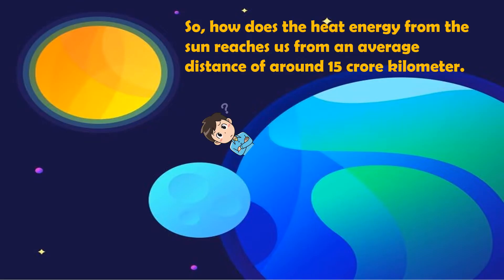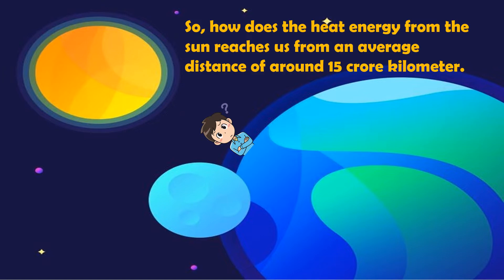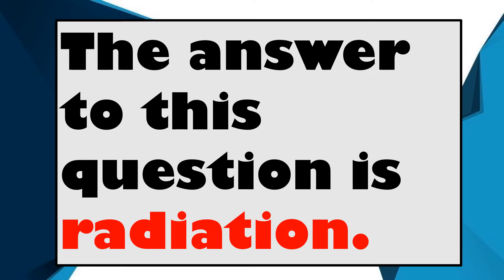So how does the heat energy from the Sun reach us from an average distance of around 15 crore kilometers? The answer is radiation. The heat energy from the Sun reaches us by another mode of heat transfer called radiation. Radiation can be defined as the mode of heat transfer from distant sources in the environment without requiring any medium or contact.